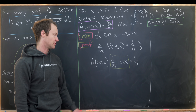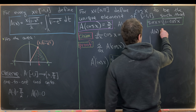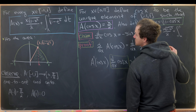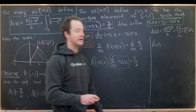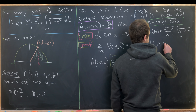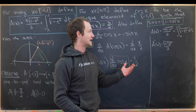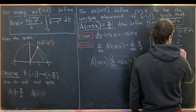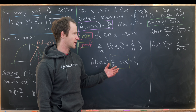Let's compute A prime in general using the dummy variable u. So A(u) = u times sqrt(1 minus u squared) over two, plus the integral from u to one of sqrt(1 minus t squared) dt. Applying the product rule to the first term gives sqrt(1 minus u squared) over two. The derivative of sqrt(1 minus u squared) via the chain rule picks up a minus sign, contributing minus u squared over two times sqrt(1 minus u squared).